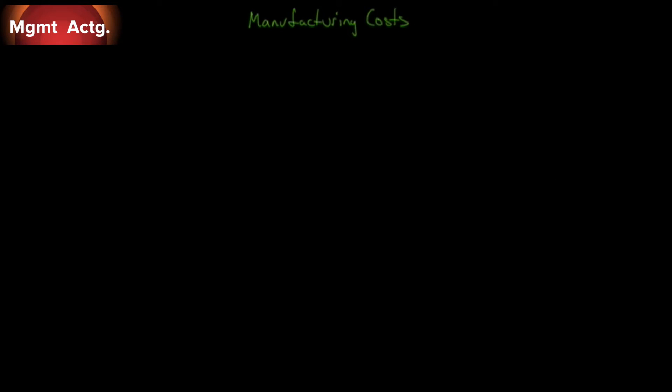Remember, we're talking about a manufacturing company. Before we get into how we do cost accounting, we need to classify costs. We're going to look at two broad categories: manufacturing costs and non-manufacturing costs. Our manufacturing costs end up in cost of goods sold, so we also call them product costs because they end up in the product itself before it's sold.